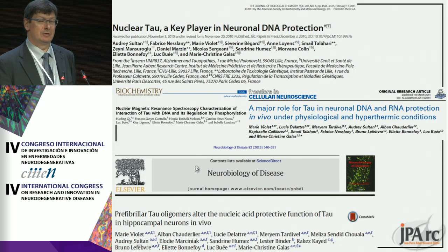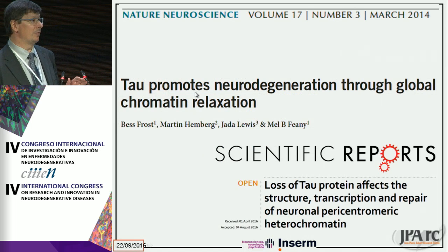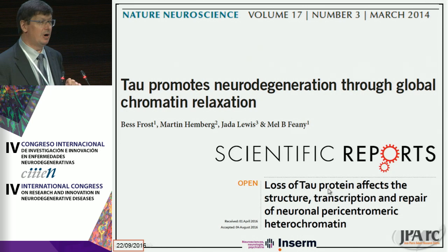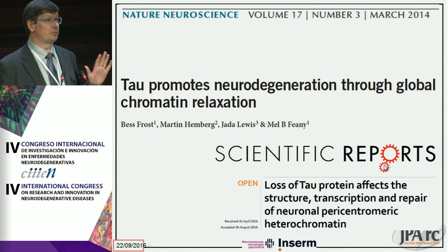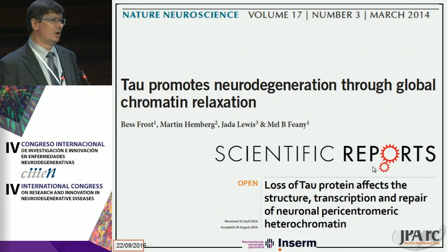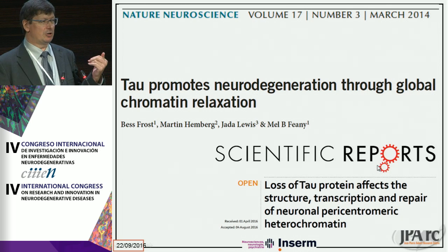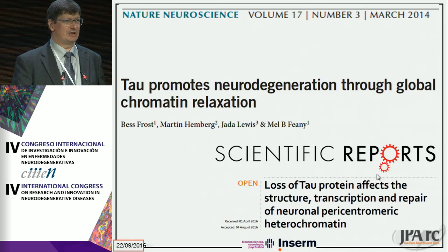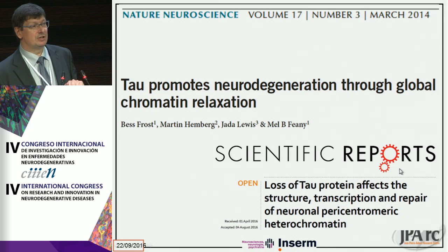We and others have shown that tau is also involved in chromatin remodeling. Specifically, loss of tau affects the structure and transcription and repair of pericentromeric heterochromatin. So tau is a key player in the nucleus, having roles in chromatin, transcriptional effects, and protection. In transcriptomic studies in tau knockout mice, we show a huge variation in the expression of genes involved in DNA repair.